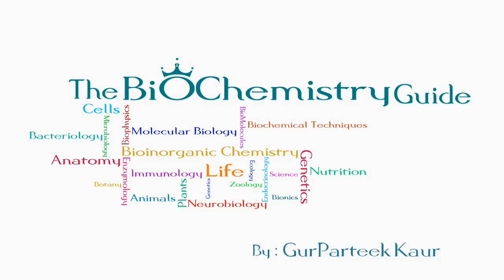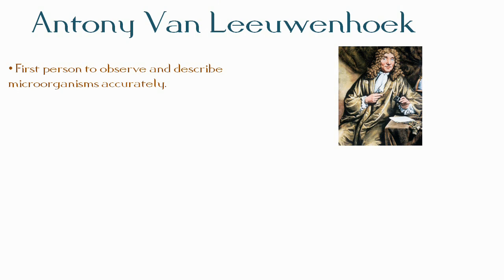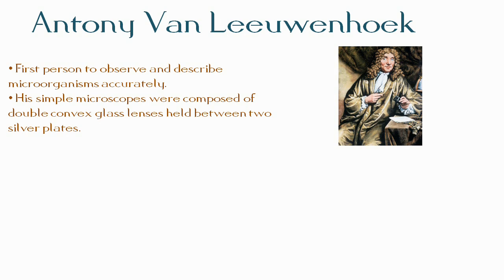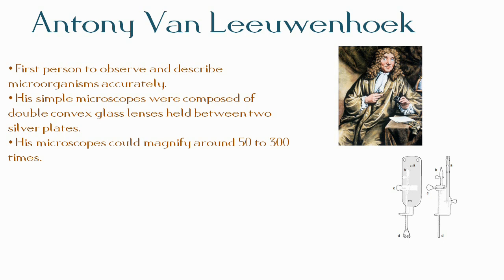The first person to observe and describe microorganisms accurately was the amateur microscopist Anthony van Leeuwenhoek of Holland. Leeuwenhoek spent much of his spare time constructing simple microscopes composed of double convex glass lenses held between two silver plates, as shown in this picture. His microscopes could magnify around 50 to 300 times.